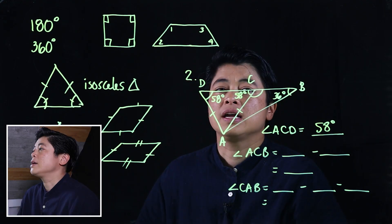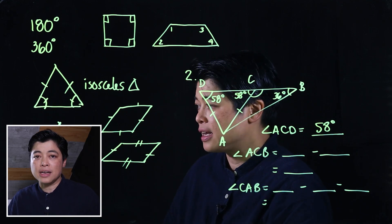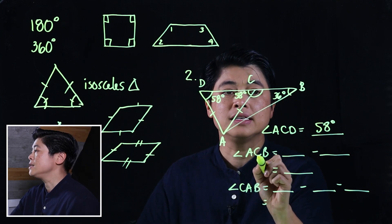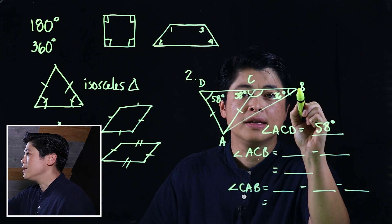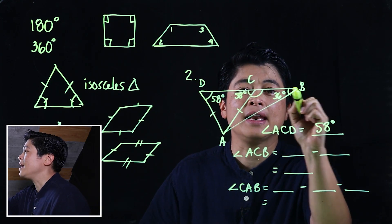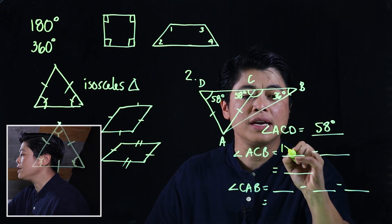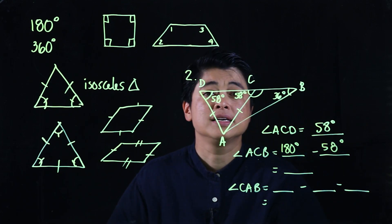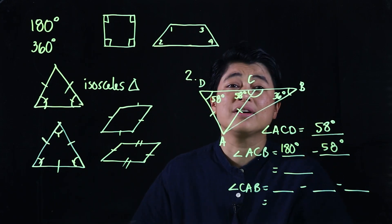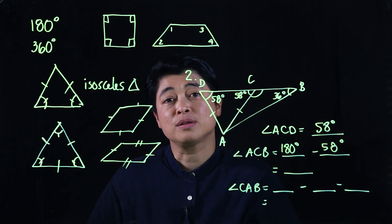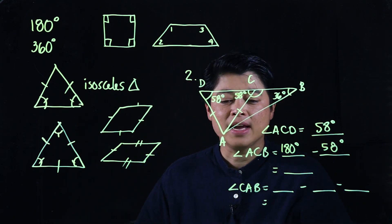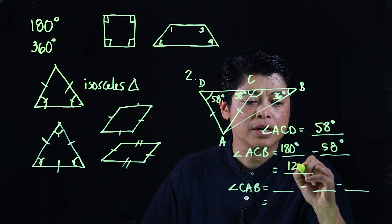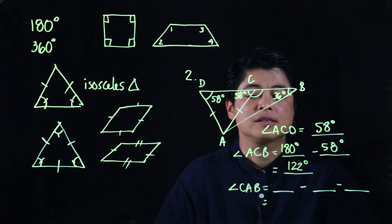The next angle to find is angle ACB. Since ACB forms a straight line, that means it's 180 degrees minus 58 degrees minus 58 degrees. This problem has no calculator, so kids need to do this mentally. The answer is 122 degrees.